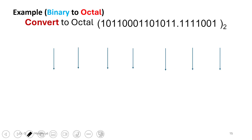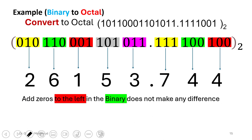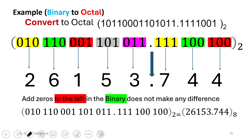Binary to octal with a floating point works the same way. Slice the binary into groups of 3 digits. Add a zero to the left if needed. The floating point in binary corresponds to the floating point in octal. From your table, write the corresponding octal number, giving you digits like 2, 6, 1, 5, 3 before the point and 7, 4, 4 after the point.